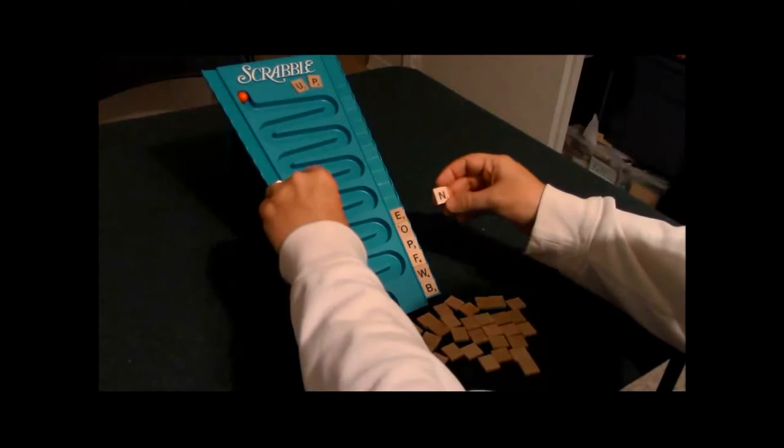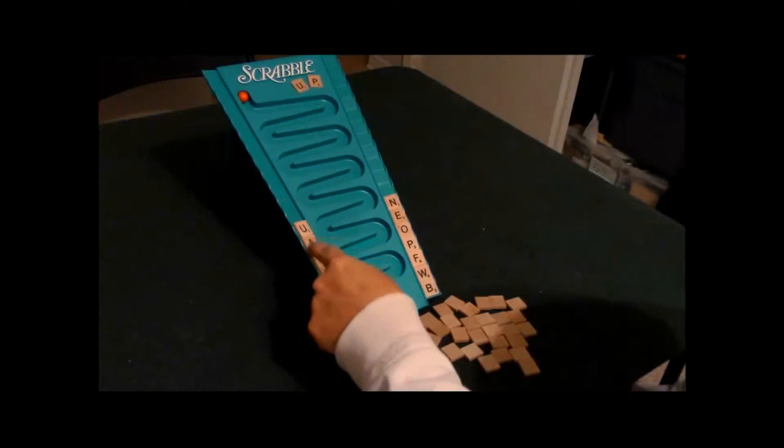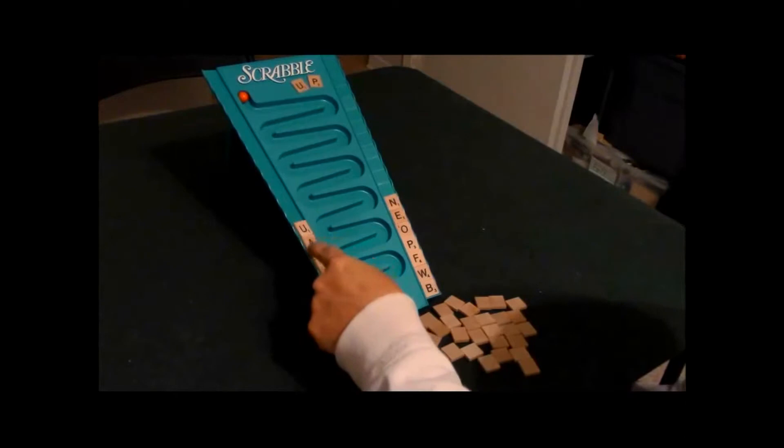So the way we're going to do this is each of us is going to draw a tile, and we'll just go ahead and start with this. Now my opponent is going to have to find a word that begins with this letter U. I'm going to have to try to find a word that begins with the letter N, and it has to be at least two letters.